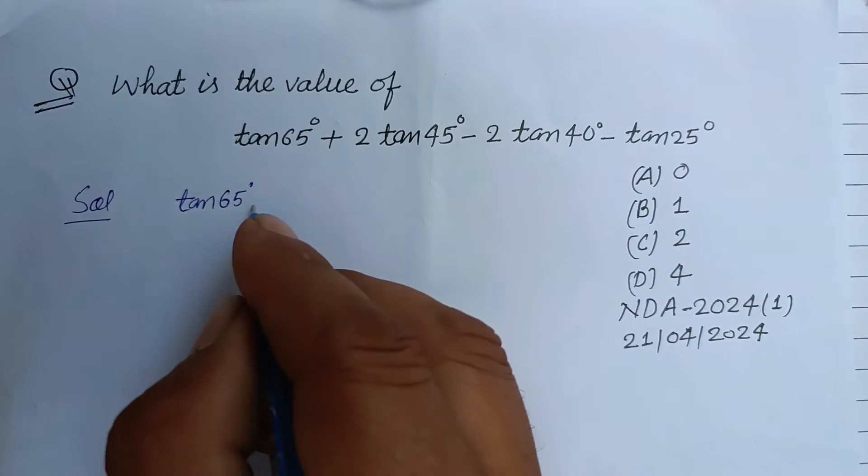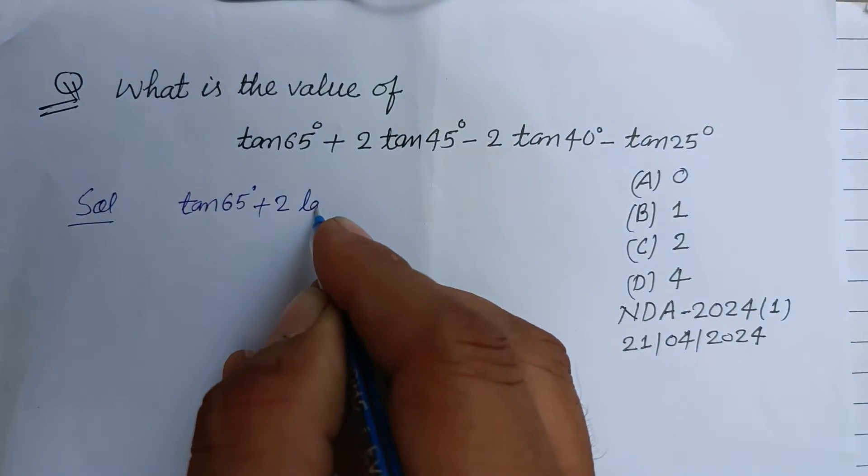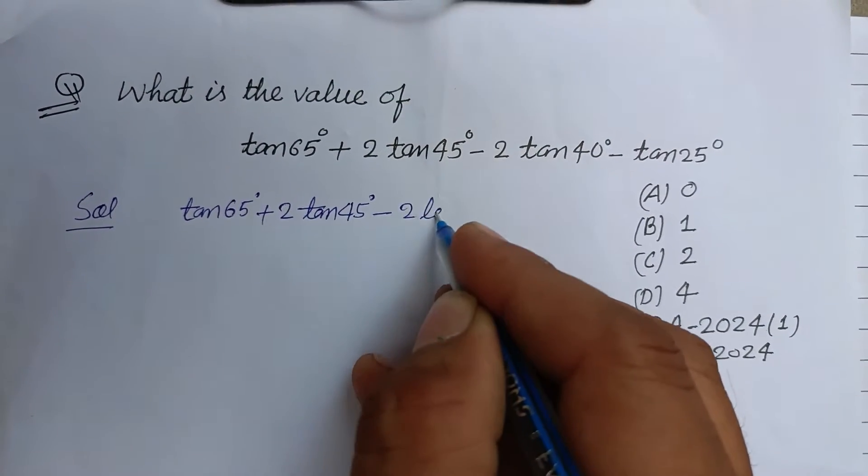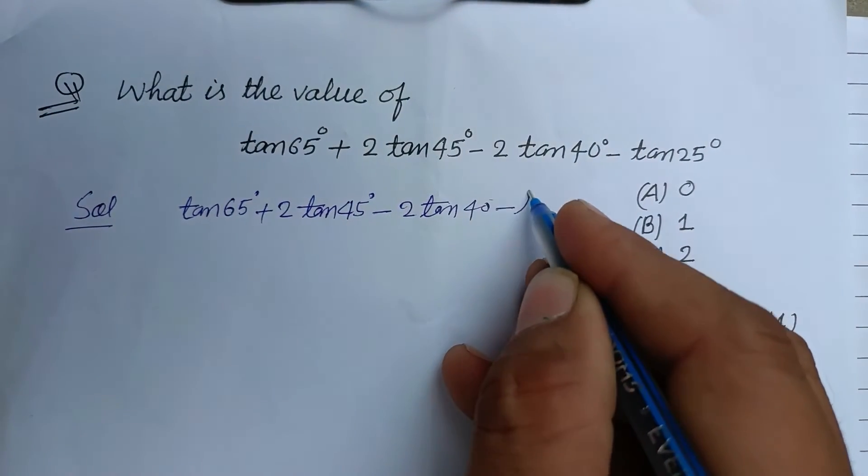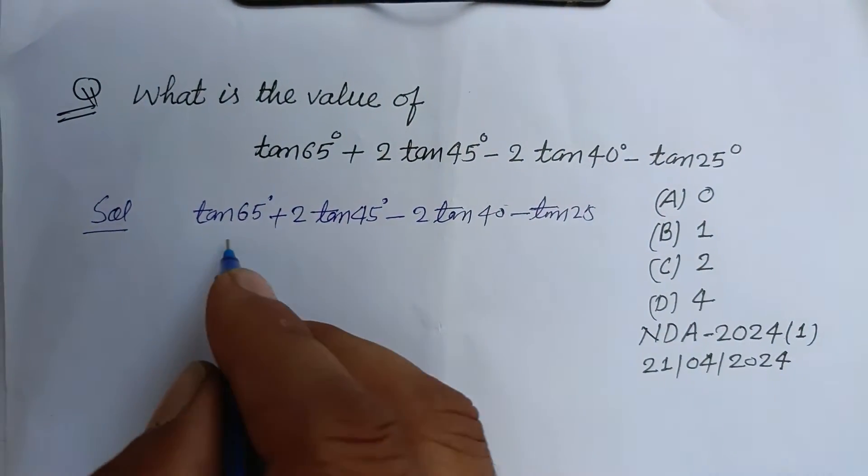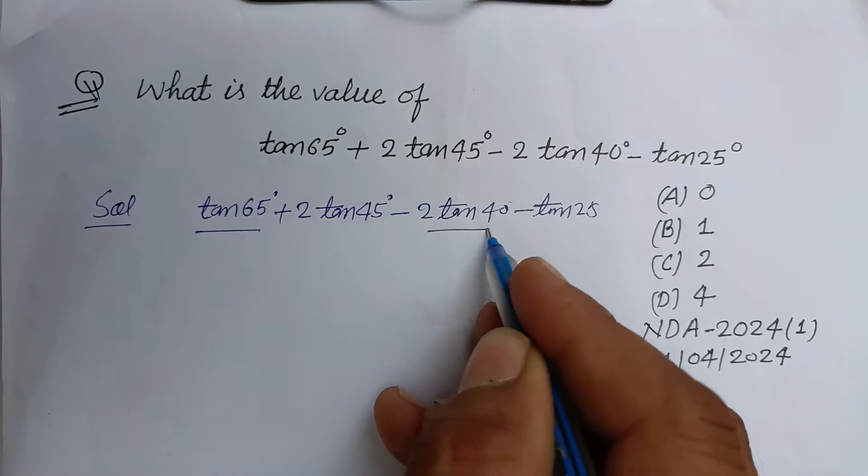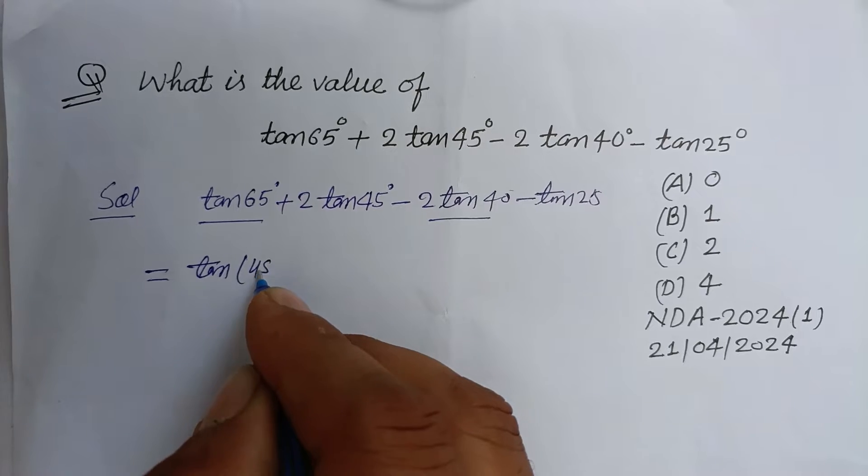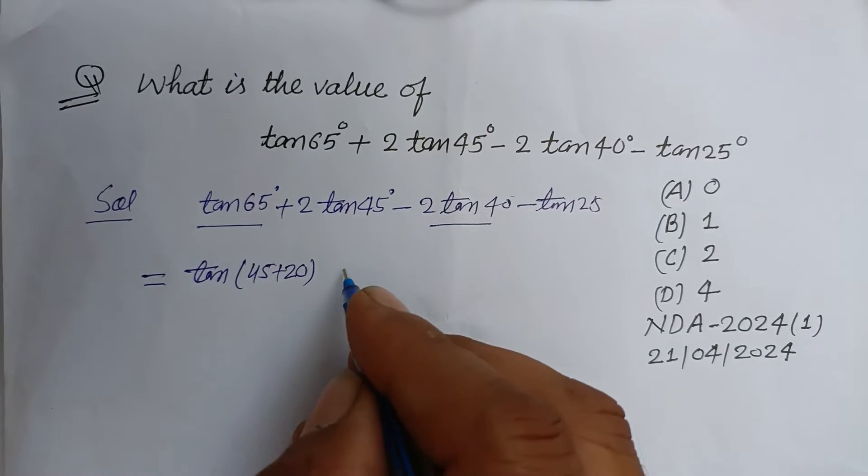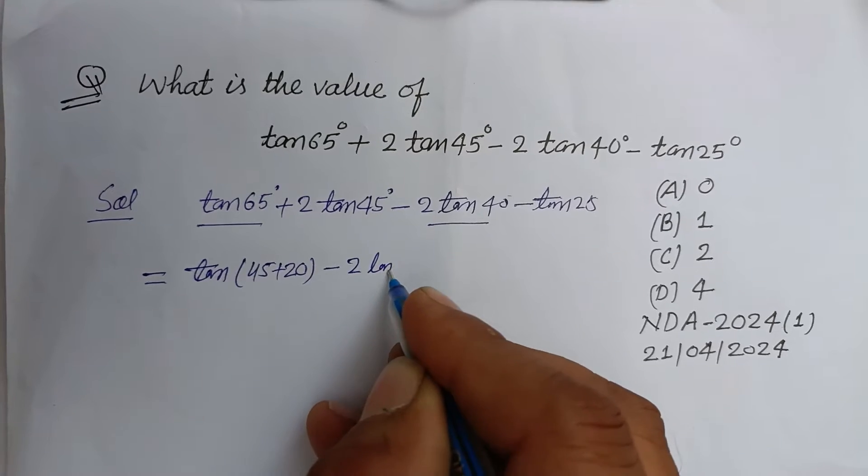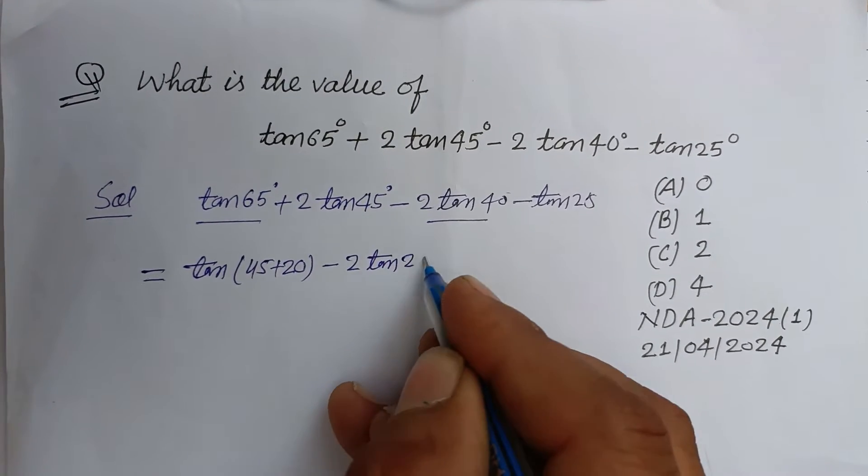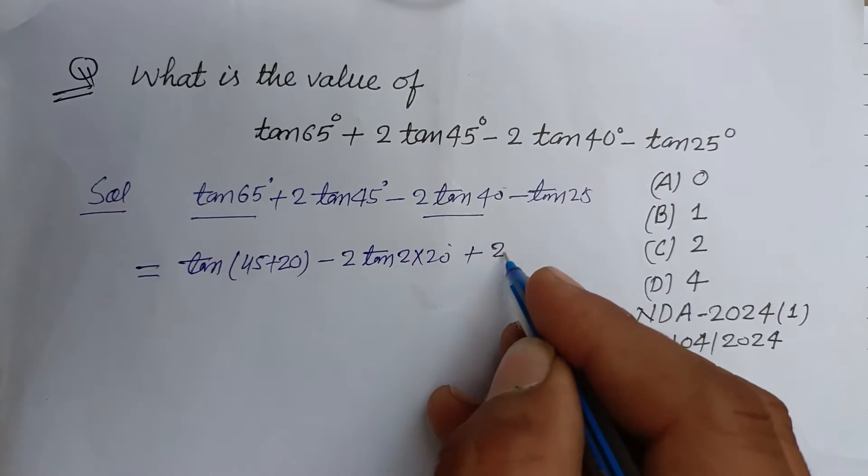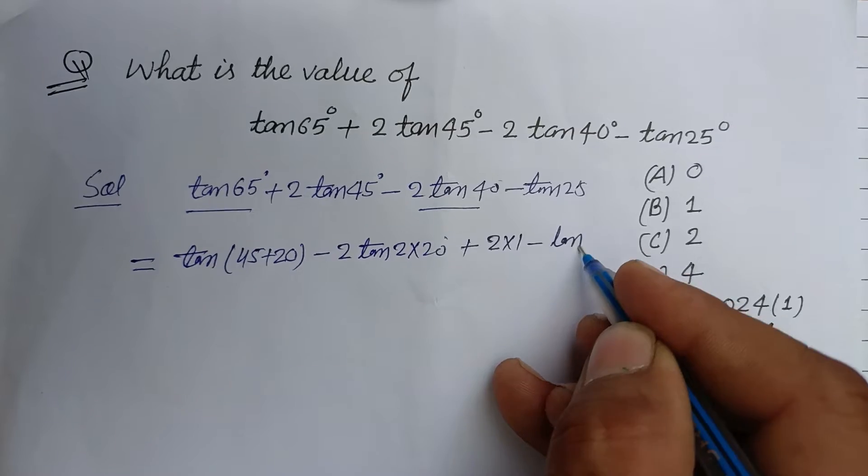So student, here we have tan65° + 2tan45° - 2tan40° - tan25°. We take these terms together. tan65° can be written as tan(45° + 20°), and tan40° can be written as 2 times tan20°. And you know that tan45° is 1, so 2 into 1 minus tan25°.